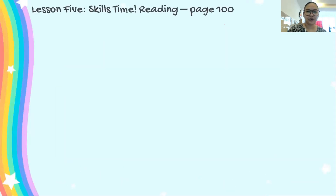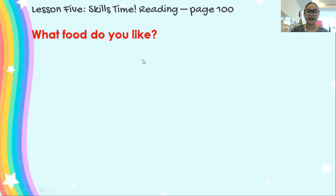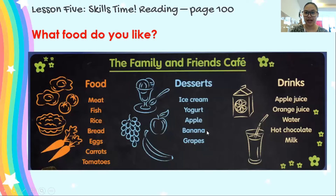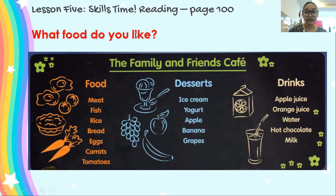Get your student book and turn to page 100. And let's look at this one. This is an example of a menu. So this is the menu from the Family and Friends Cafe. Now, what food do you like? Let's read the words. Here we have food, desserts, and drinks.